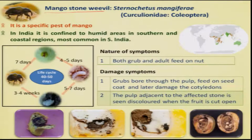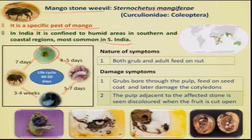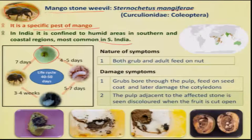Another important pest of quarantine importance is the mango stone weevil, Sternochetus mangiferae. It is quite specific to mango, does not attack other fruits, and is quite common in southern India. During the off season, adults are found on the bark and branches. Once fruiting starts, they shift to the fruits, inserting eggs at the marble or younger stage. The grubs enter through the pulp into the stone and feed on the cotyledons. Externally, no symptoms are visible, so for internal consumption it is not a problem. But once the grubs complete their stage and adults emerge, the fruit rots and drops.